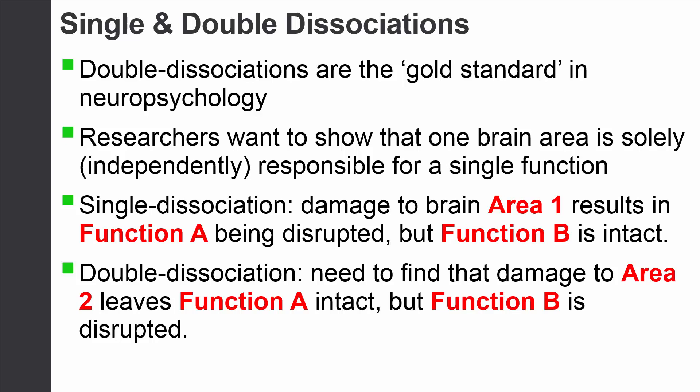One of the things neuropsychologists really want to do is show that one brain area is responsible for one very specific function. There are two ways to do that. There's a single dissociation: if you damage one area of the brain, you'll notice that one particular behavior or function is disrupted, while another one remains intact.